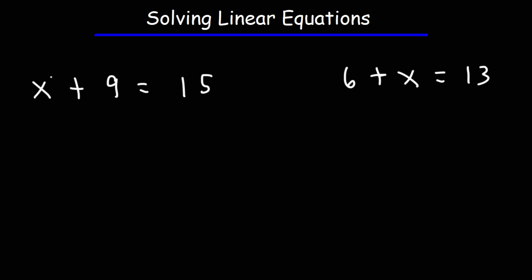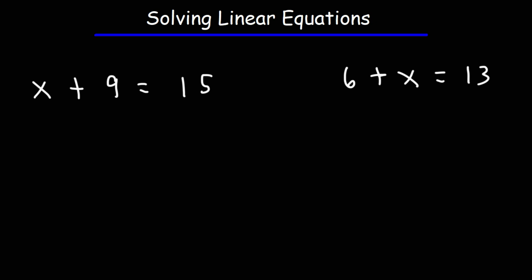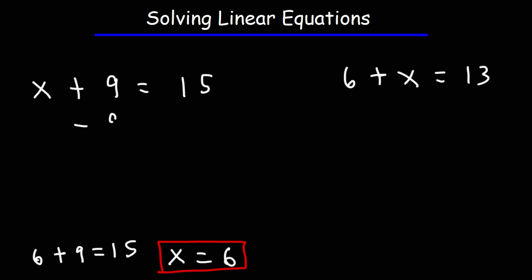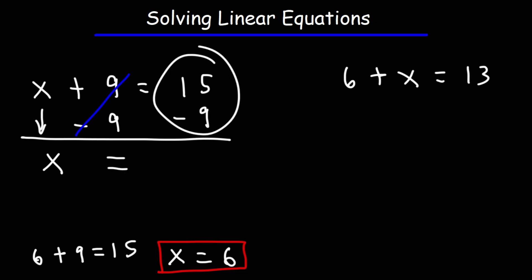Let's think about the first one intuitively. What number plus 9 is equal to 15? We know that 6 plus 9 is 15, so x has to equal 6. To show your work, perform the opposite operation of addition — subtract both sides by 9. These two will cancel, and we bring down the x, getting x is equal to 15 minus 9, which is 6.